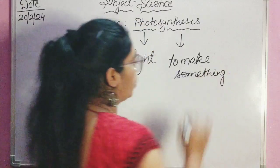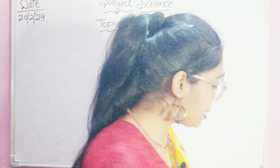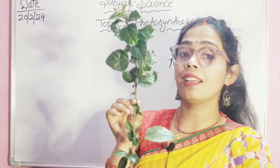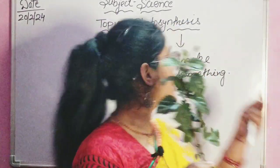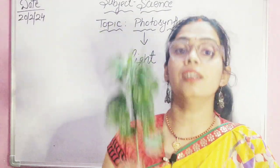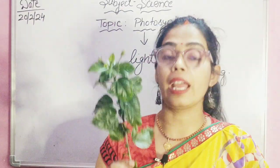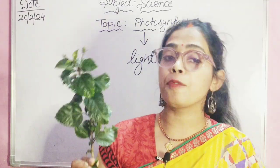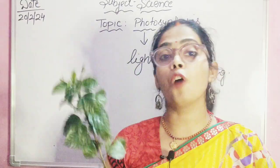So photo means light and synthesis means to make something. Now, what is this? Yes, this is a plant. Photosynthesis is related to how plants prepare their food — just like your mother makes food at home, plants also prepare their own food.